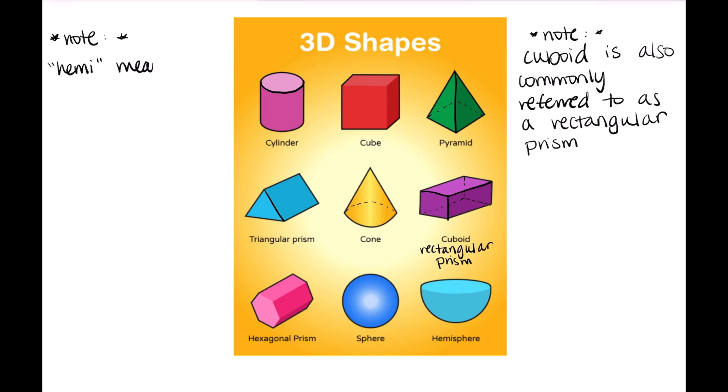And then the second important note that I want you guys to notice is that hemi, that means half. So when we're looking at a hemisphere compared to a sphere, all it means is that a hemisphere is half of a regular sphere. I just wanted to point that out because in this picture, the hemisphere looks a little bit larger than half of the sphere, but that is the technical definition of hemisphere.